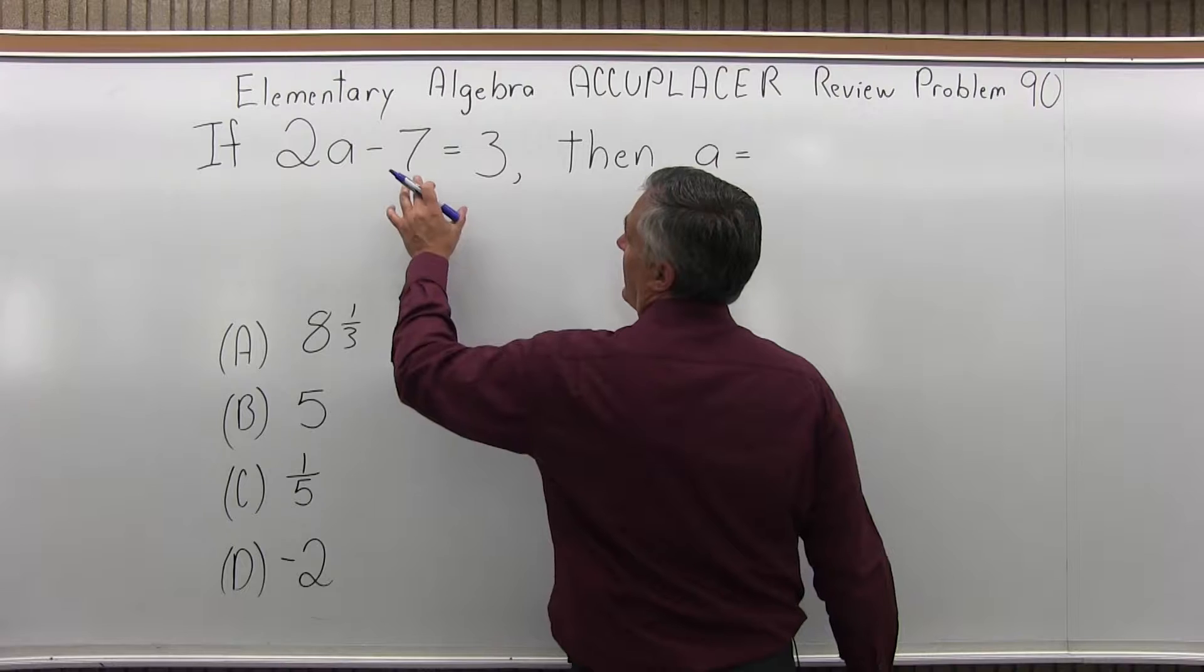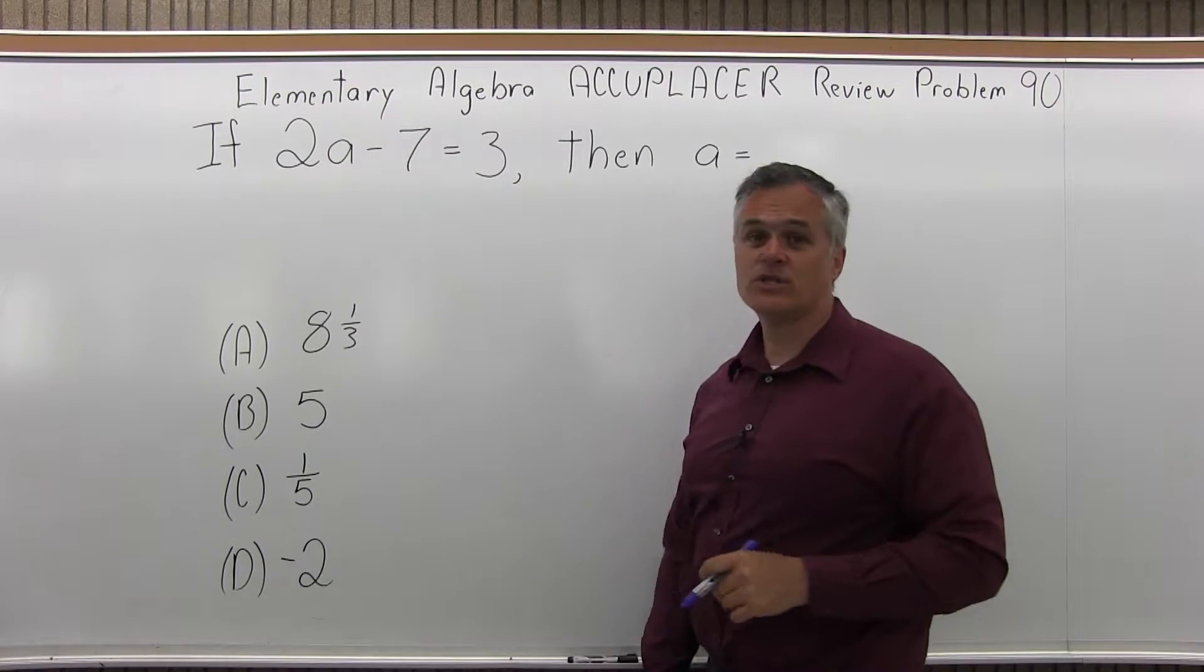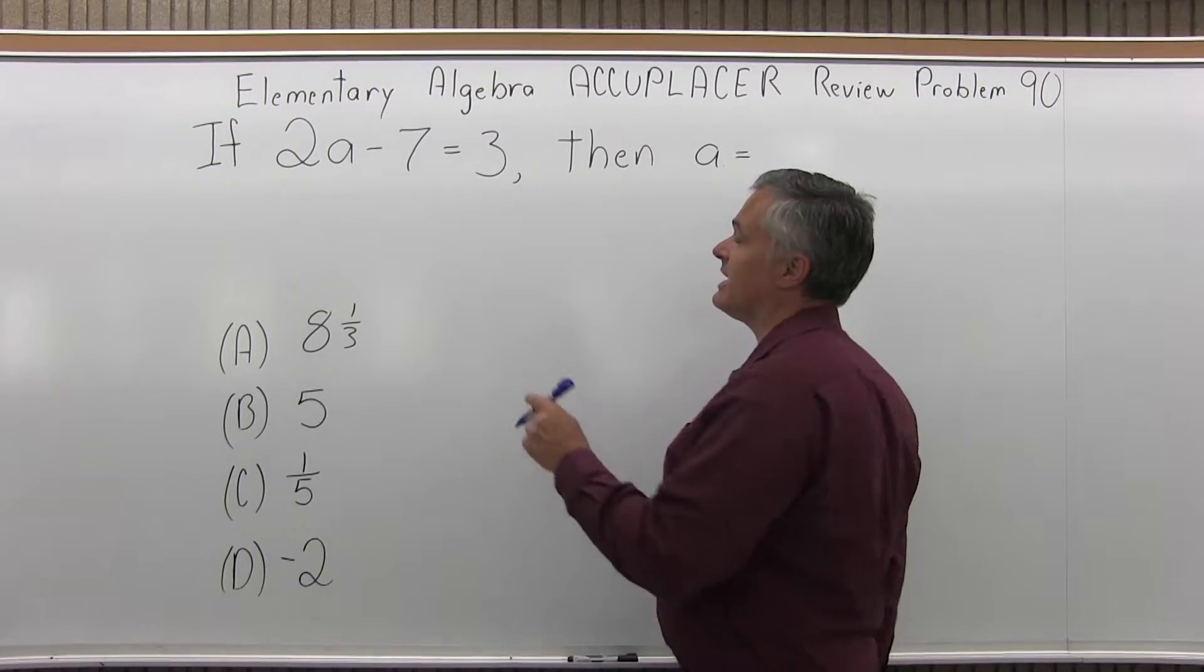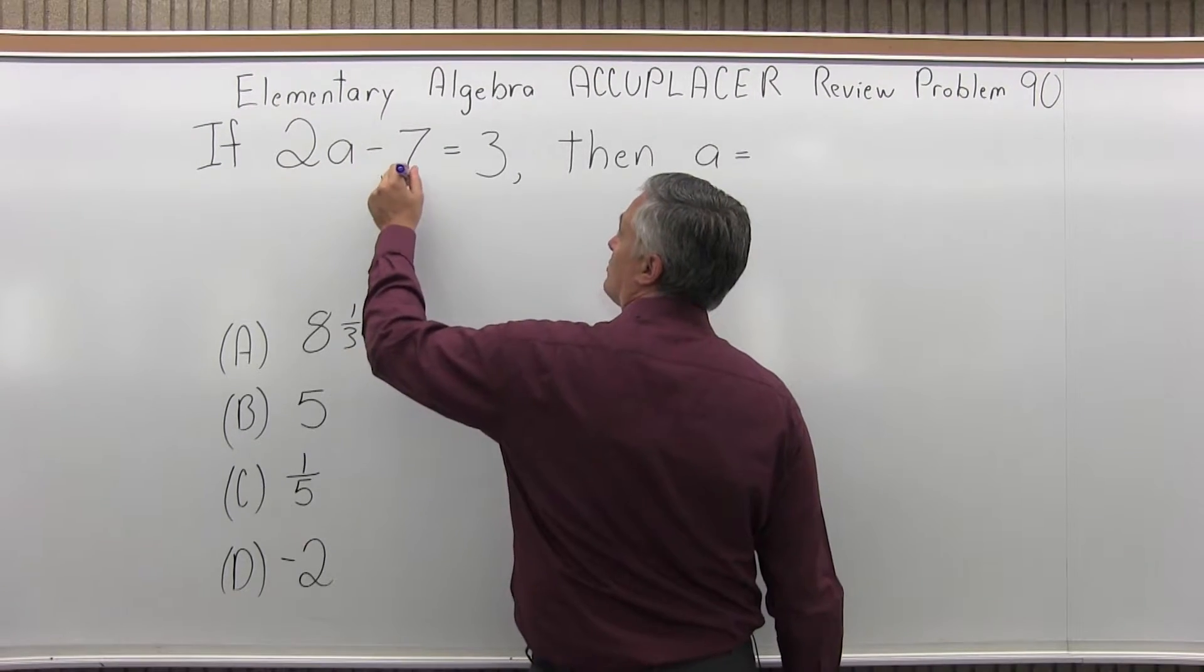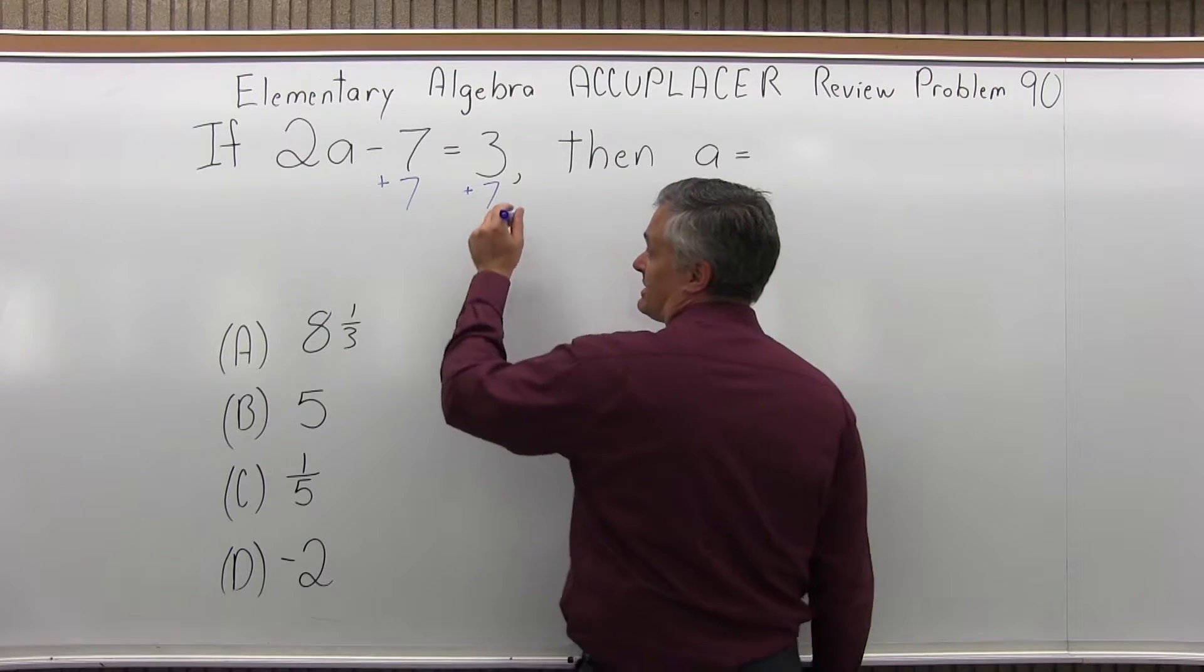So first, I want to get rid of the minus 7 on the left side of the equal sign. You can do anything you want in an equation as long as you do the same thing on both sides. So on the left side, I'm going to do plus 7 to get rid of this minus 7. And on the right side, I'll also do plus 7.